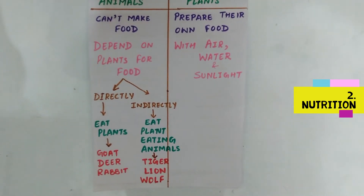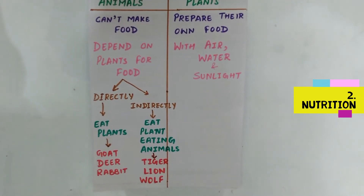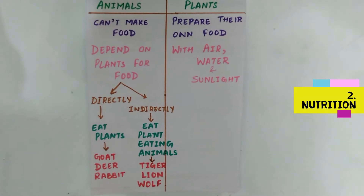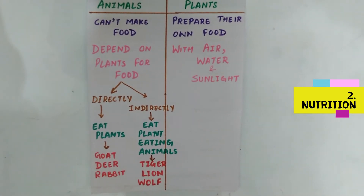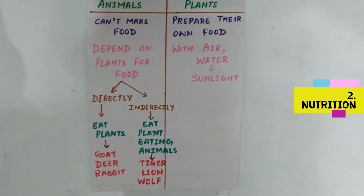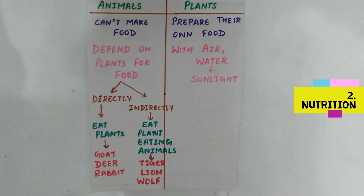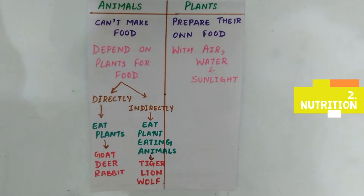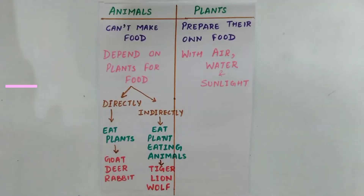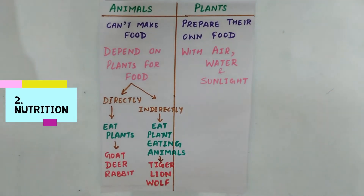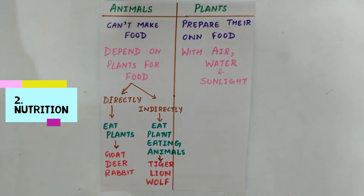Directly, animals eat plants. For example: goat, deer, and rabbit. Indirectly, animals eat plant-eating animals. For example: tiger, lion, and wolf. Plants prepare their own food with air, water, and sunlight.